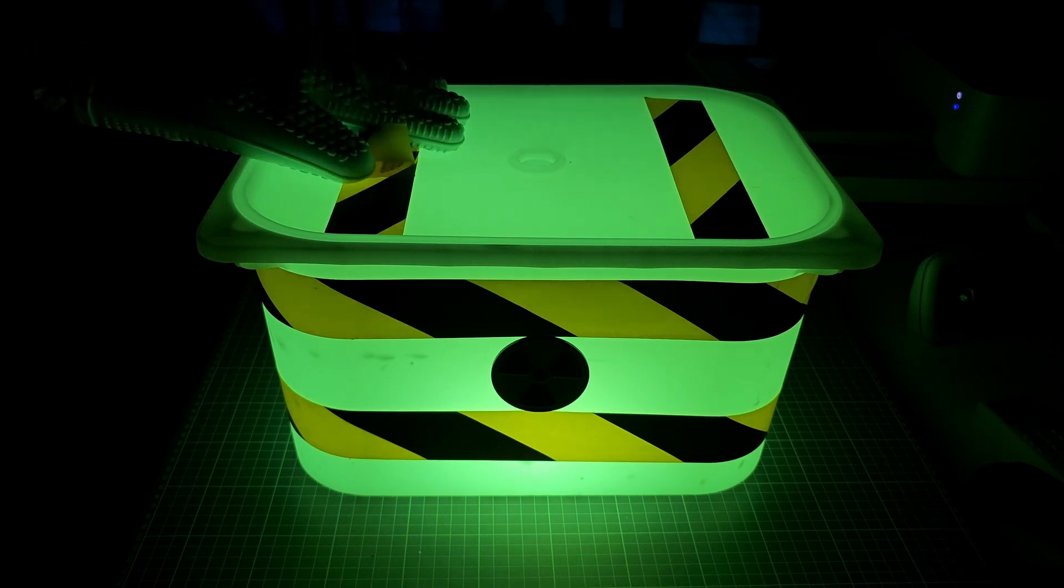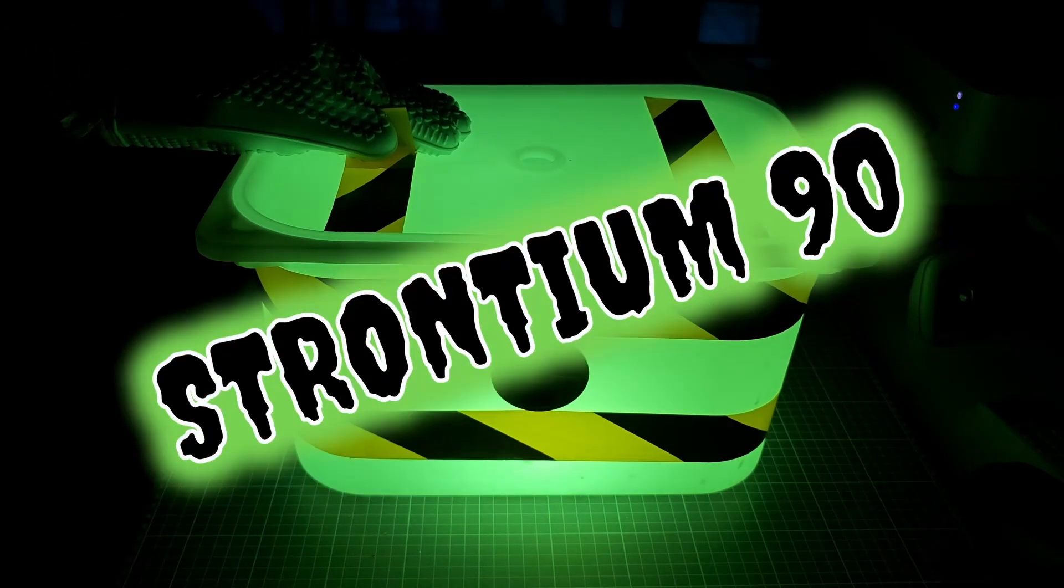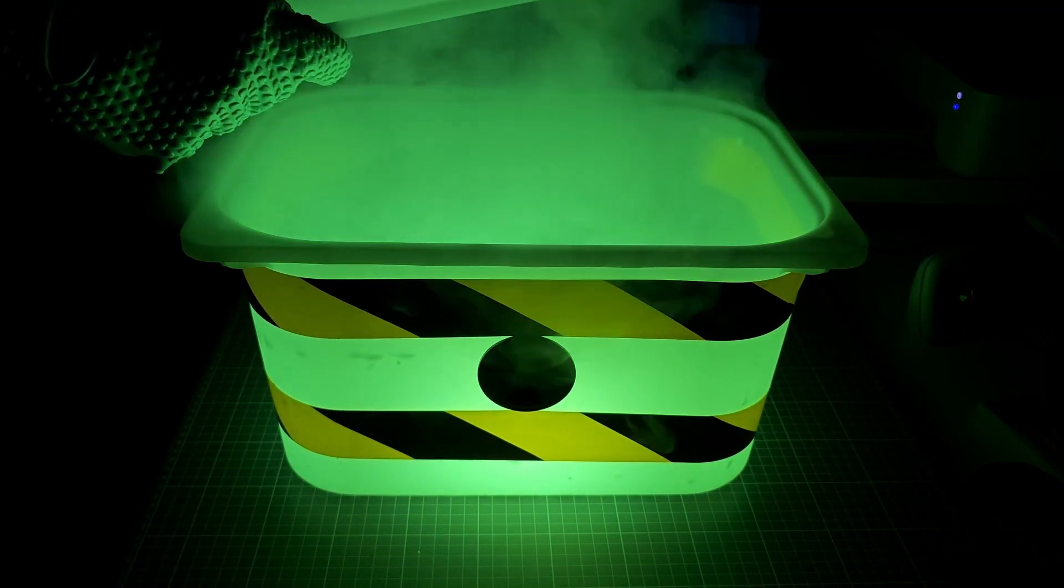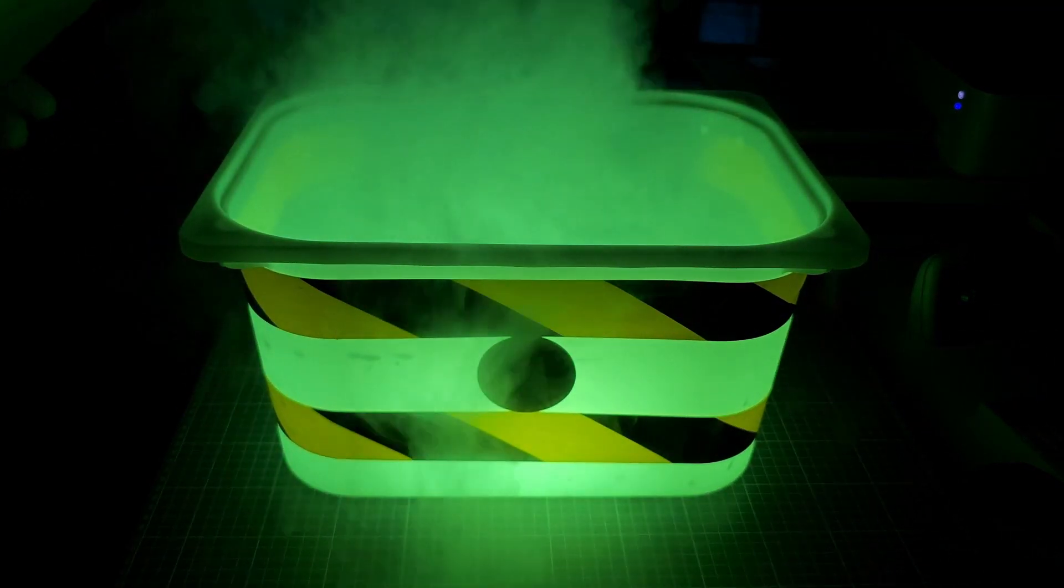For the source of our beta particles, we're going to use strontium-90. So now all that we have to do is take our supply of strontium-90 out of containment and get it ready for this experiment.